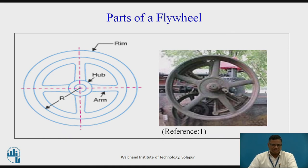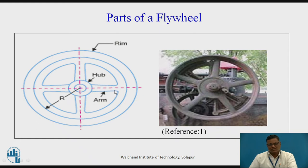The different parts of the flywheel: a flywheel is basically a heavier wheel, and being circular we can observe its different parts. At the centre there is a hole needed because the flywheel is fitted on the crankshaft. Surrounding this hole is the part called the hub, and the outermost part is called the rim. The hub and rim are connected to each other with the help of arms, also called spokes. Here four arms are shown in one diagram and five in another, and the outer rim portion can be observed.